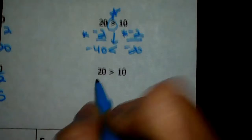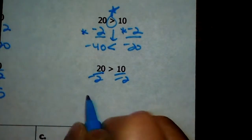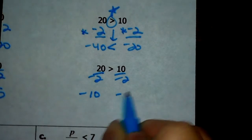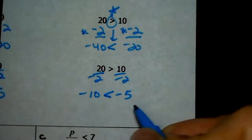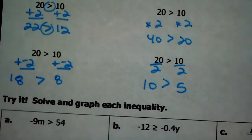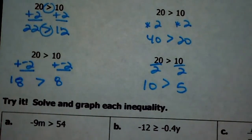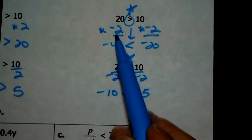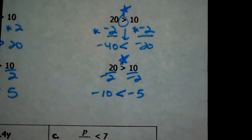The same goes for if you divide by a negative. 20 divided by negative 2 is negative 10, and 10 divided by negative 2 is negative 5. Is negative 10 greater than negative 5? No — negative 10 is less than negative 5. So in all the other examples, if you add, subtract, multiply, or divide by positive numbers, nothing changes. But if you have to multiply or divide by a negative to solve it, in your final answer you have to flip the sign. That's the only time you have to flip the sign. So let's try some of these.